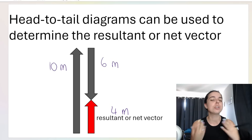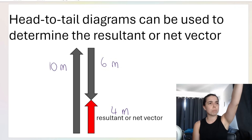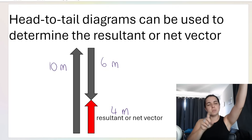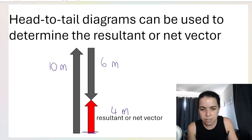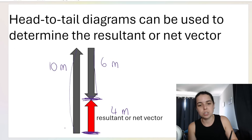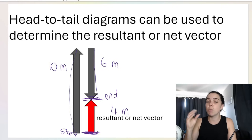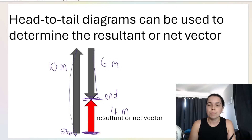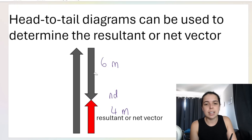Think about it — it should make sense. If you walk 10 meters north and then turn around and go 6 meters back, how far are you from your starting point? The red arrow represents displacement — from where you start to where you end. You went 4 meters north overall.